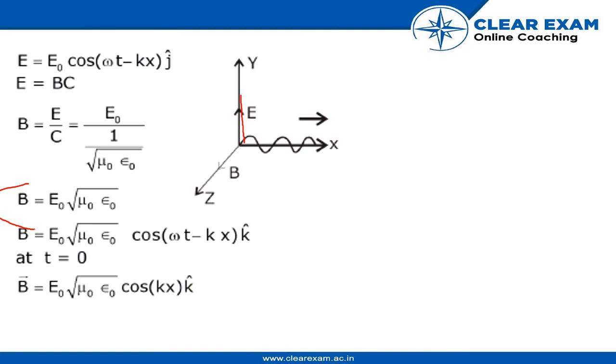Since we need to find the magnetic field at time 0, we put t = 0. At the end, we get our answer: B = E₀√(ε₀μ₀) cos(kx) k̂, and the magnetic field moves in the k direction.